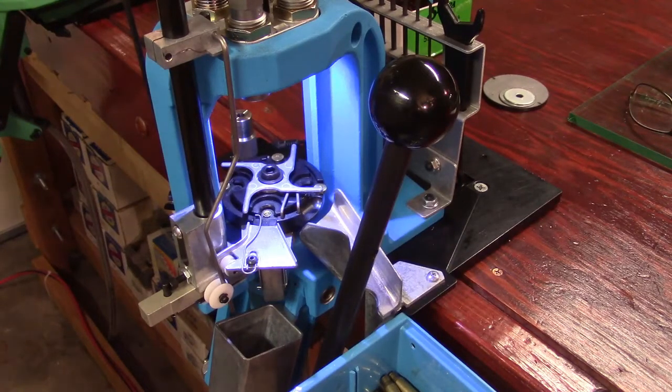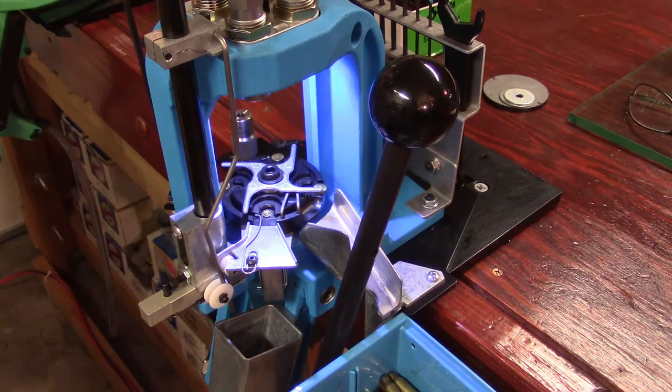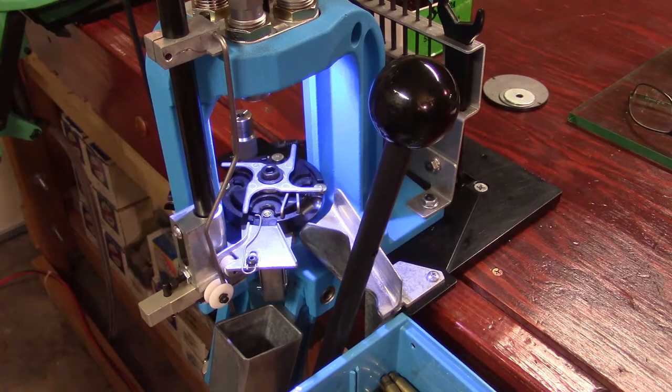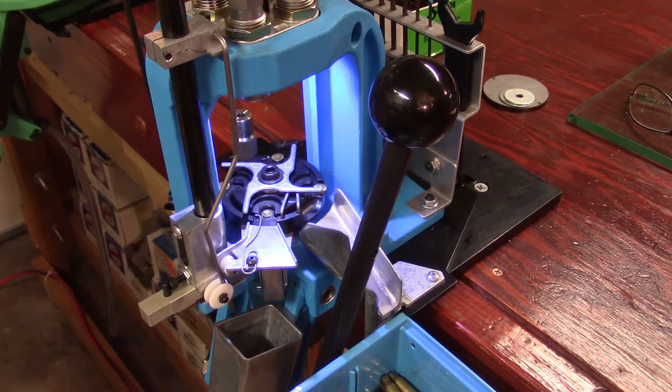The selling point for the Dillon RL550B is manual indexing. What does that mean, and how does it benefit the reloader?